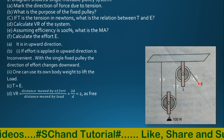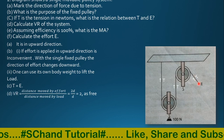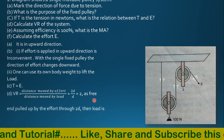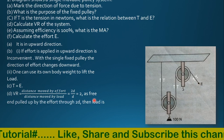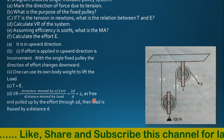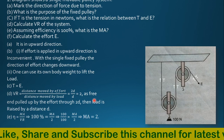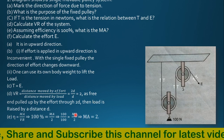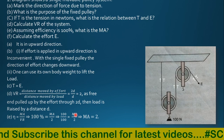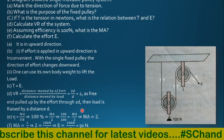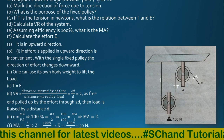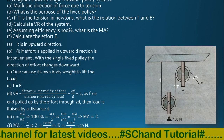The distance moved by the effort over the distance moved by the load equals 2d over d, which is equal to 2. The effort end of the pulley moves through distance 2d, then load is raised by distance d. Efficiency equals 100%, so mechanical advantage over 2 equals 100 over 100, giving mechanical advantage equal to 2. Since mechanical advantage equals load over effort and load is 100N, the effort is 50N.